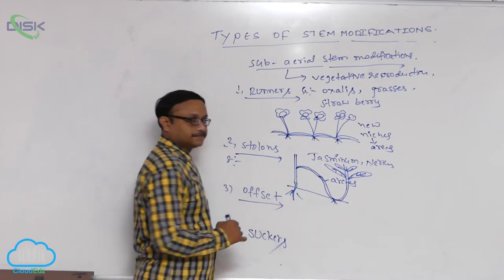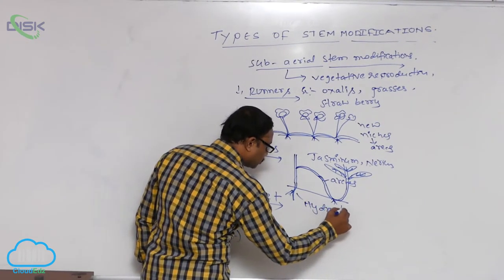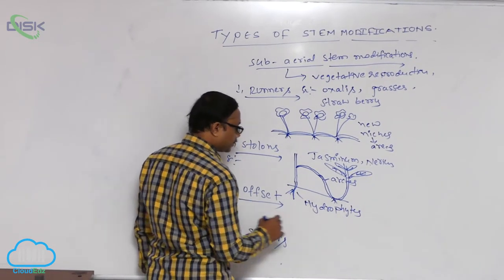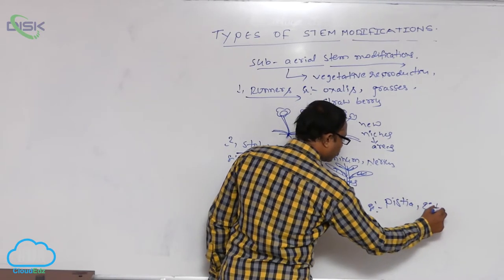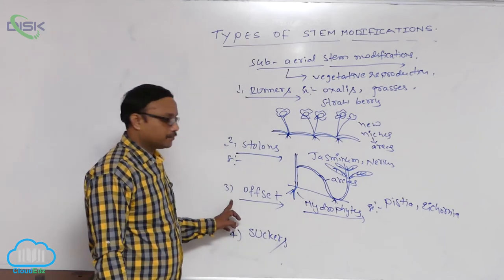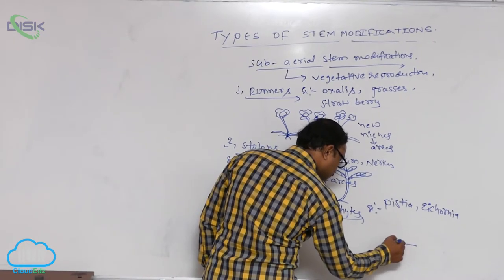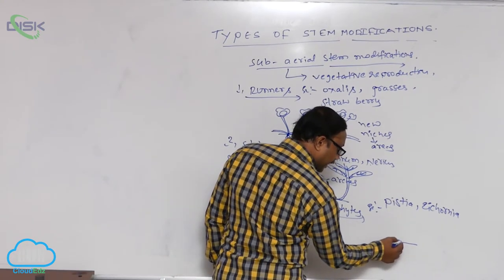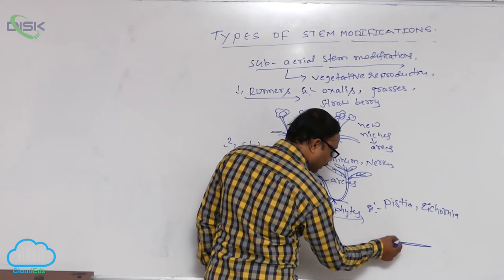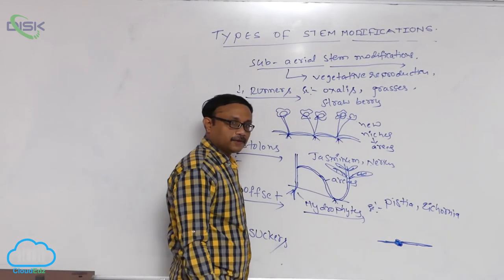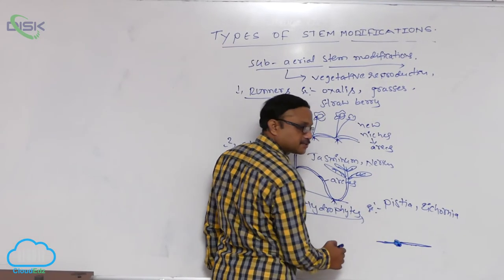Offsets are generally observed in hydrophytes — plants that grow in water. Examples include Pistia and Eichhornia. In these plants, the stem is a disc-like structure. From the axil of a leaf on the discoid stem, branches of one internode length are produced. These are known as offsets.